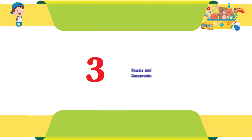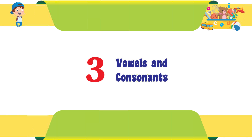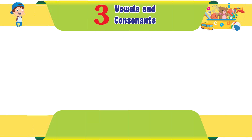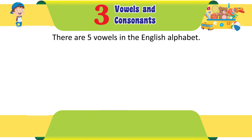Chapter 3: Vowels and Consonants. There are five vowels in the English alphabet.